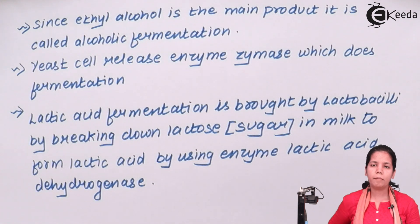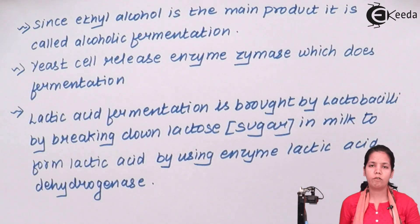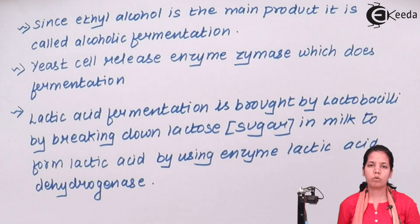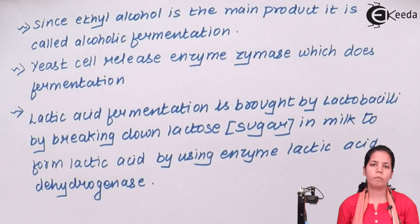We covered the definition of fermentation — chemical changes brought about by microorganisms. We identified two kinds of fermentation: alcoholic fermentation, which gives a by-product of ethyl alcohol carried out by Saccharomyces cerevisiae; and lactic acid fermentation, which breaks down lactose sugar to produce lactic acid, carried out by Lactobacillus.